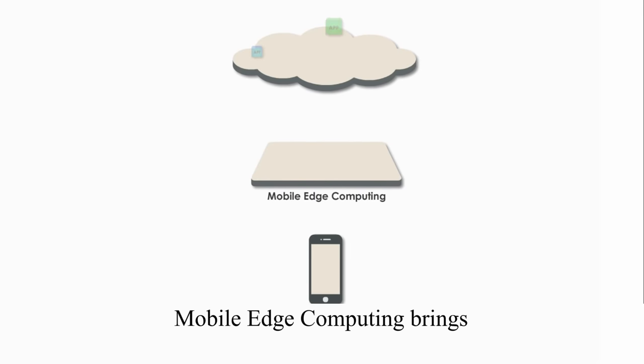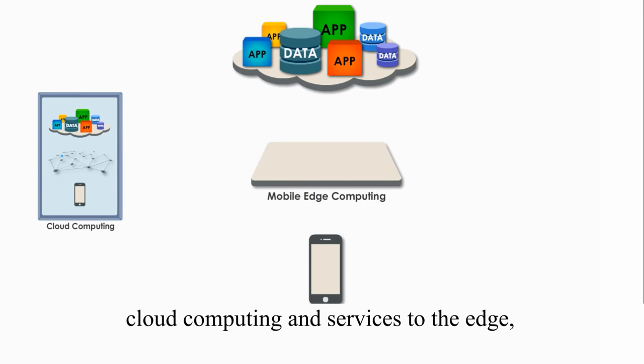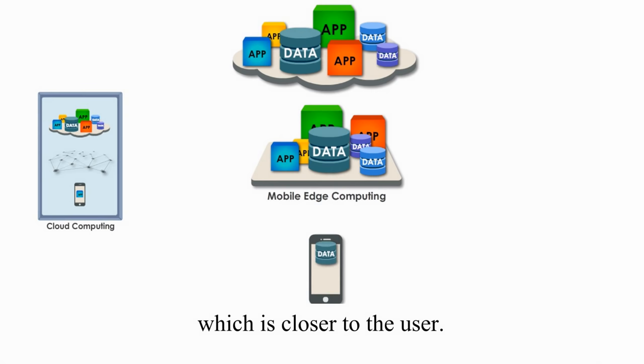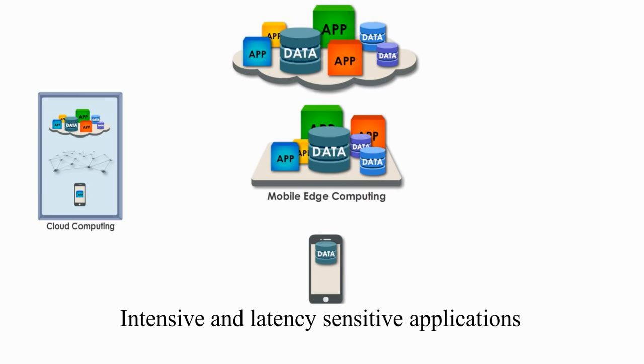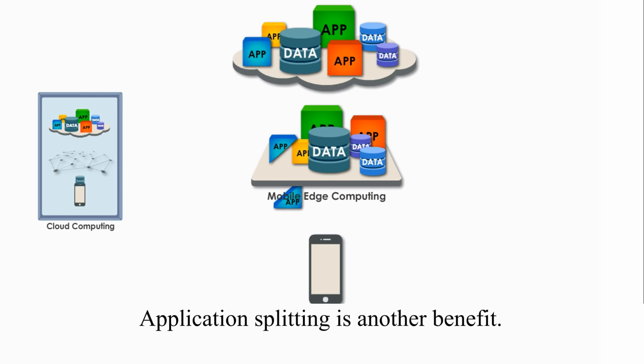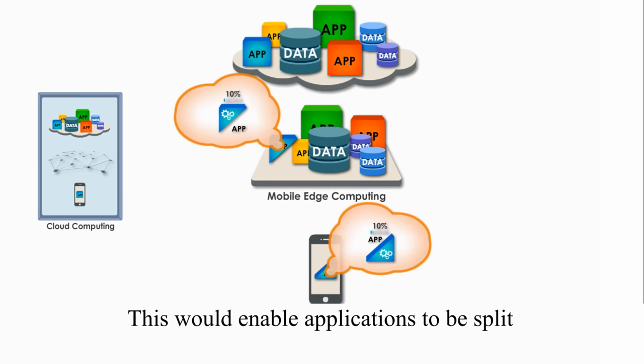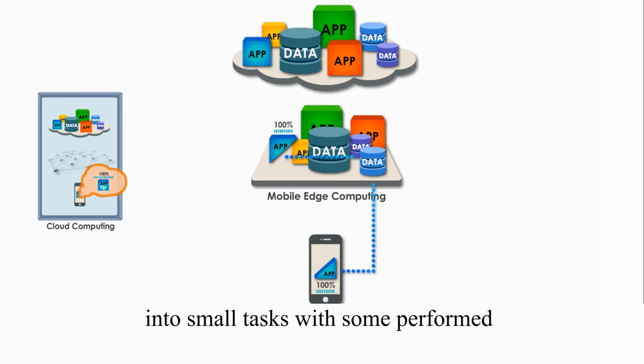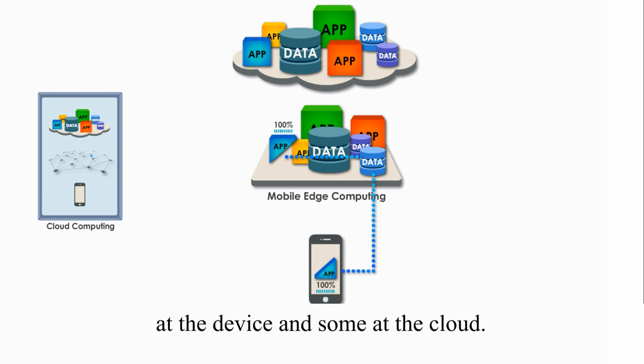Mobile edge computing brings cloud computing and services to the edge, which is closer to the user. They are physically local to users. In other words, intensive and latency-sensitive applications like augmented reality or video conferences can be hosted at the edge of the network. Application splitting is another benefit. This would enable applications to be split into small tasks, with some performed at the device and some at the cloud.